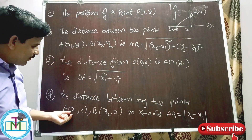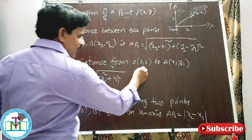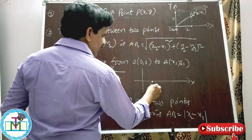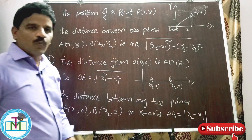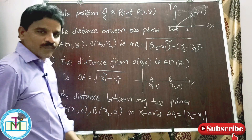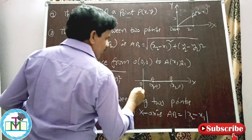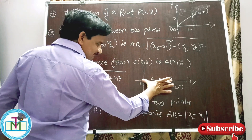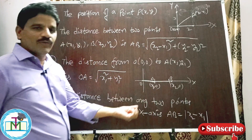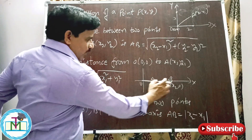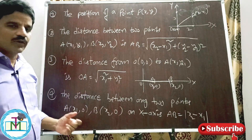Point number four: the distance between any two points A(x1, 0) and B(x2, 0) on the x-axis. This is also an important formula for competitive exams. The distance AB is given by the difference between OB and OA, which gives us simply |x2 − x1|. So x2 minus x1 represents the distance between A and B on the x-axis.